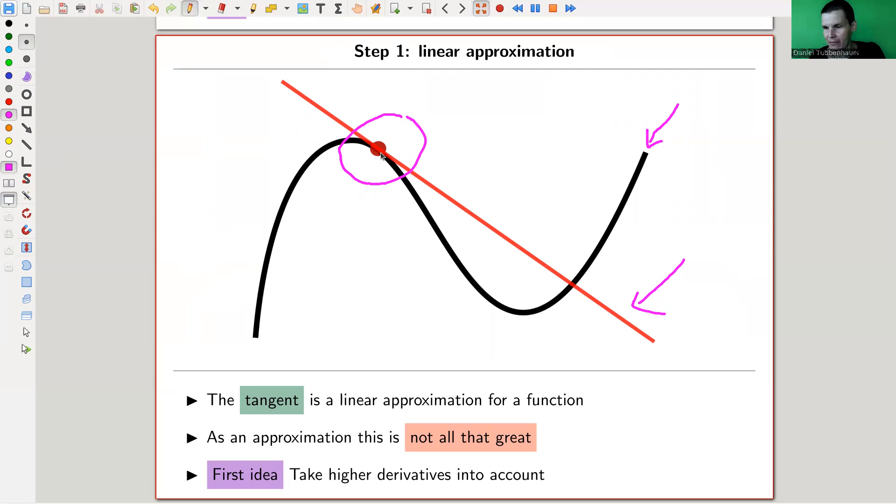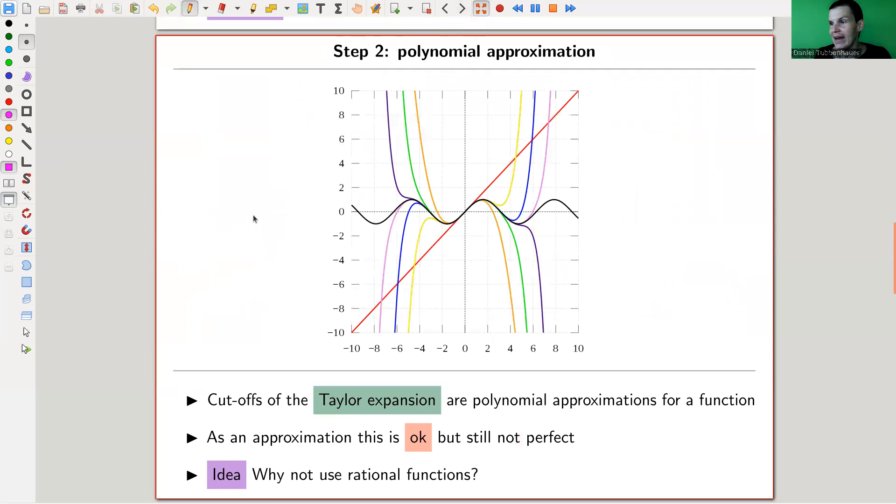And that's really classical, of course. And the first idea, of course, the first idea people have tried is just to take higher derivatives. So this is the first derivative, maybe you should just take higher derivatives, and you get kind of more and more sophisticated functions. And that's essentially the idea of the Taylor approximation.